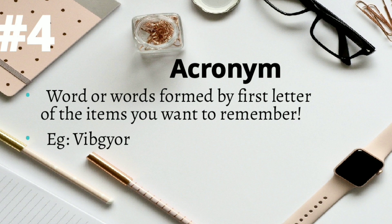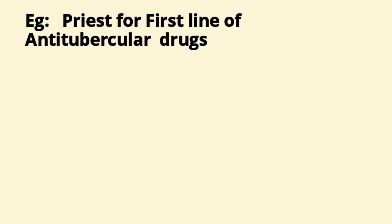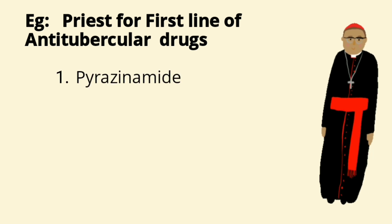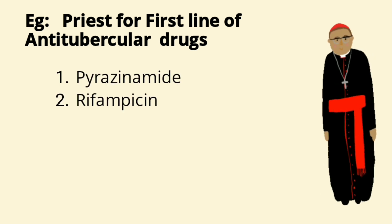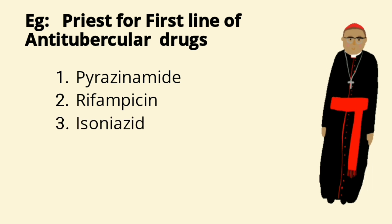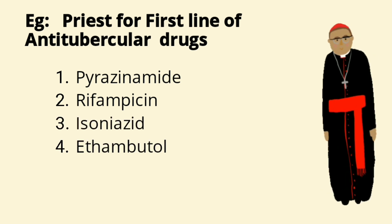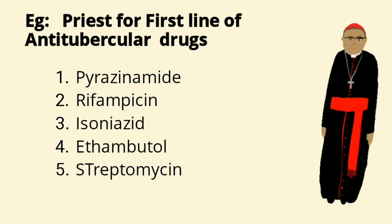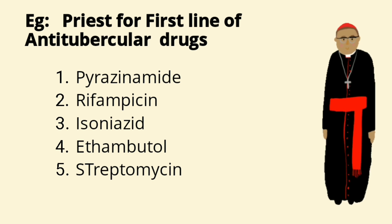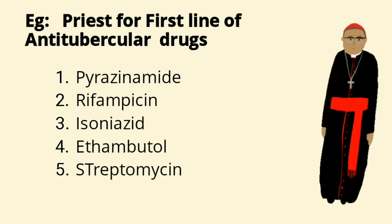The fourth type of mnemonic is the acronym — the most commonly used mnemonic. A word or words are formed by the first letter of the items you want to remember. An example is VIBGYOR for the colors of the rainbow. Another example is PRIEST for the first-line anti-tubercular drugs: P for pyrazinamide, R for rifampicin, I for isoniazid, E for ethambutol, and ST for streptomycin. The link to this video is given in the description box as well.